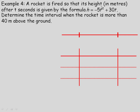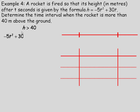In Example 4, a rocket is fired and its height in meters after t seconds is h equals negative 5t squared plus 30t. We're asked to determine the time interval when the rocket is more than 40 meters above the ground, so h is greater than 40. Substituting, negative 5t squared plus 30t is greater than 40. Subtracting 40 from both sides gives negative 5t squared plus 30t minus 40 is greater than 0.